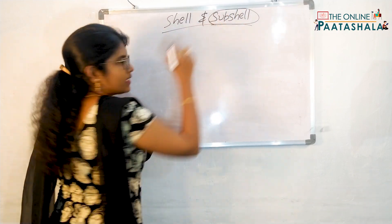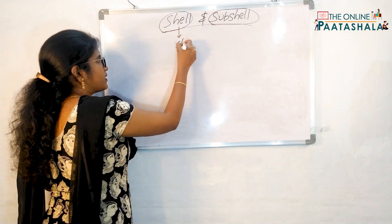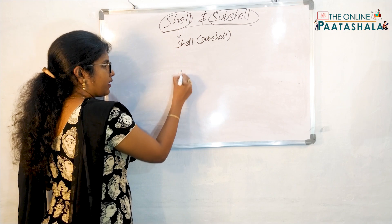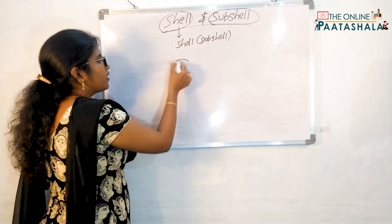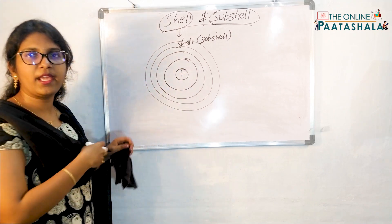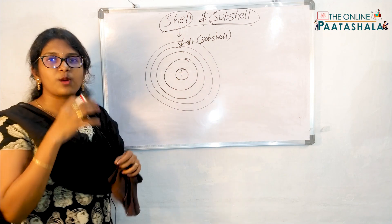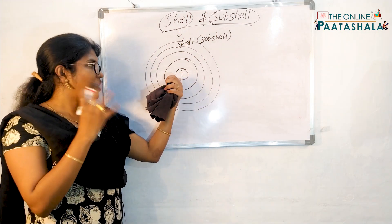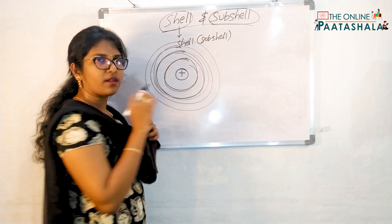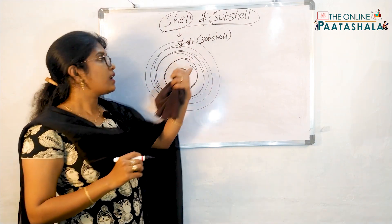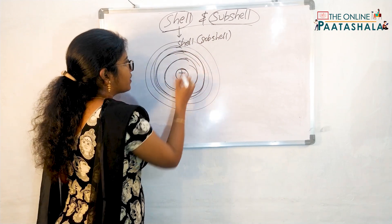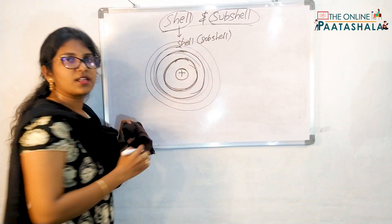In the name itself, subshell is indicating that in a shell if another shells are present, you will be calling them as subshells. You know that at the center you will be having the nucleus. Around the nucleus the electrons will be revolving in shells. Just as in a solar system the center is the sun and around that the planets will be revolving — the same thing here: the center is the nucleus and around that the electrons will be revolving in the form of shells. And in these shells you are having subshells.